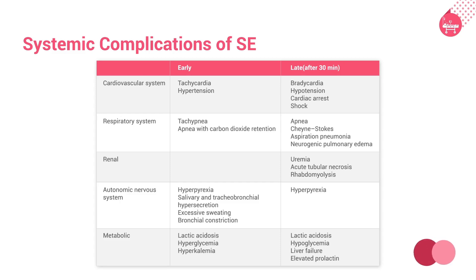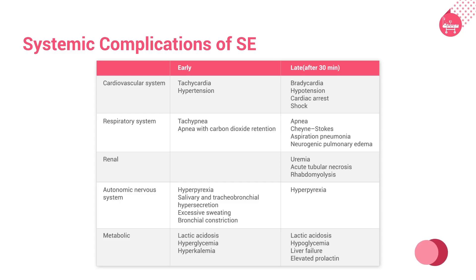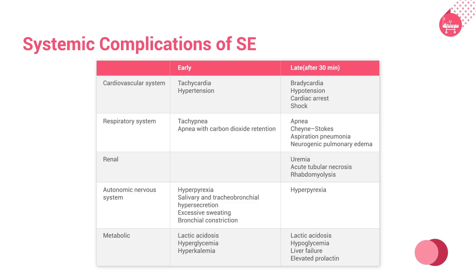Renal complications include uremia, acute tubular necrosis, and myoglobinuria. Early autonomic nervous system complications include hyperpyrexia, salivary and tracheobronchial hypersecretion, excessive sweating, and bronchial constriction; late complications include hyperpyrexia. Early metabolic changes include lactic acidosis, hyperglycemia, and hyperkalemia; late changes include lactic acidosis, hypoglycemia, liver failure, and elevated prolactin.